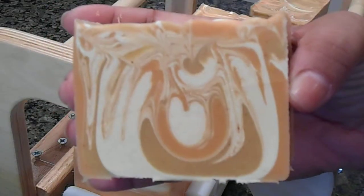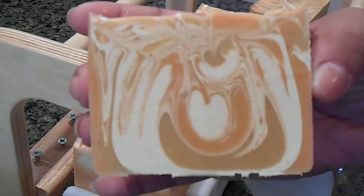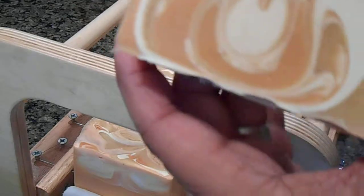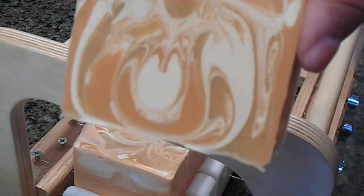Hopefully you can see that. It's got a darker orange, a white, and then a yellowish color. That's what it looks like on the inside.